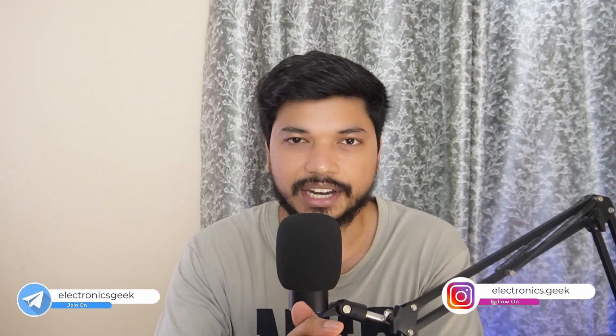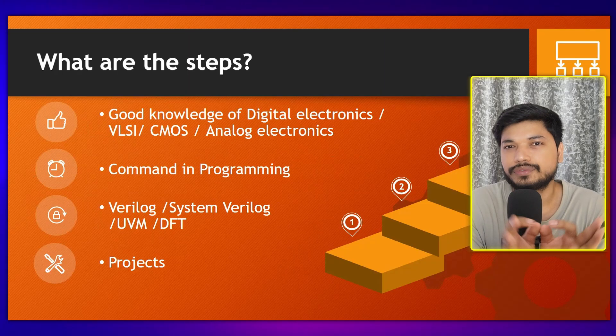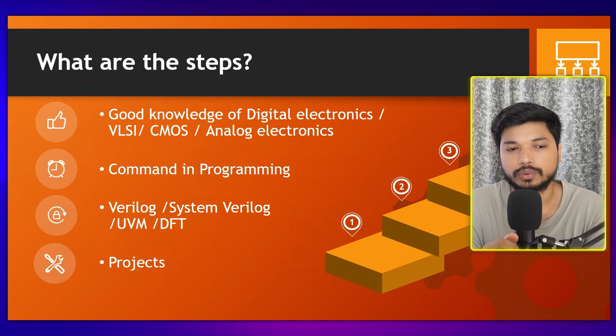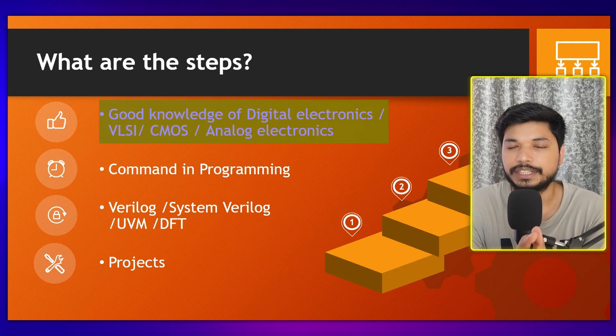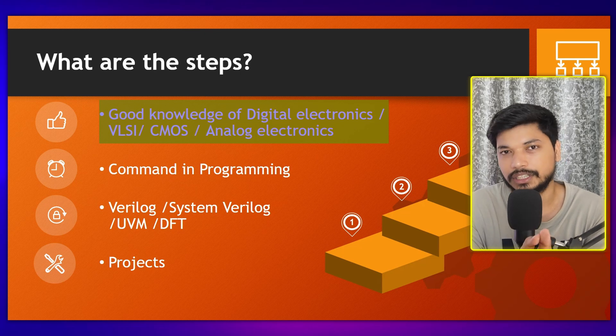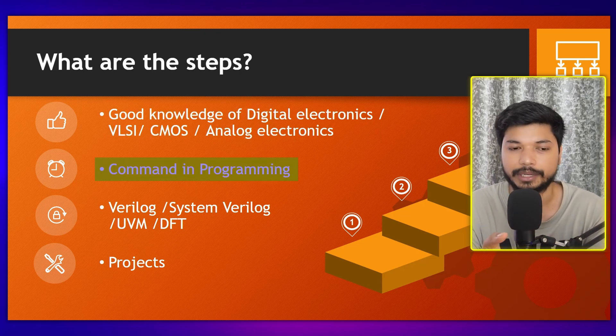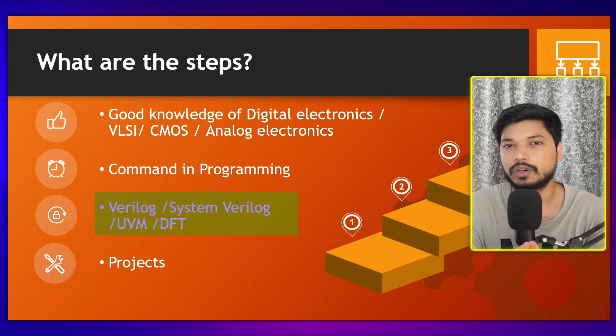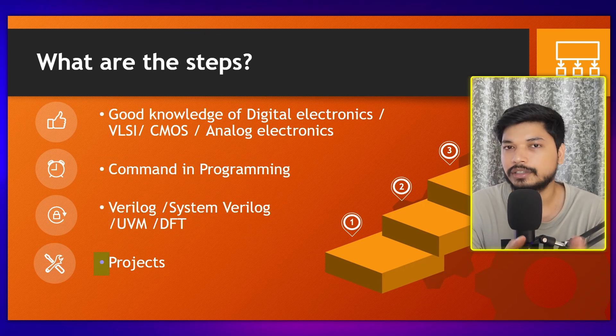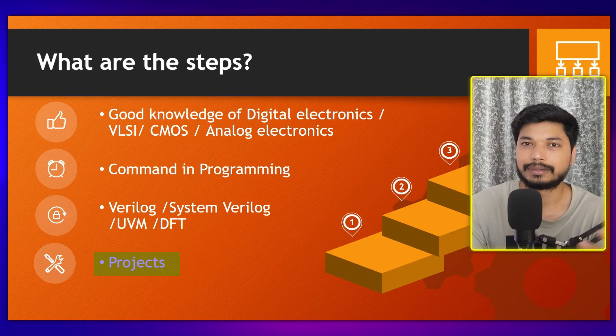So to summarize, these are the four steps — the four pillars — to get into the front-end industry: first, basic knowledge of subjects like digital electronics and VLSI; second, some command of C and C++ or programming languages; third, learn Verilog, which you can do for free; and fourth, work on projects — starting from basics like D flip-flop, adder, and subtractor in Verilog.